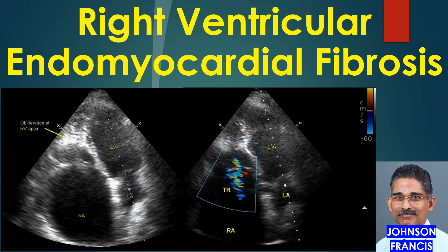This leads to the physical finding of RV outflow pulsations — a wavy pulsation in the third left intercostal space close to the sternum. The restriction of inflow into the right ventricle elevates the venous pressure greatly.